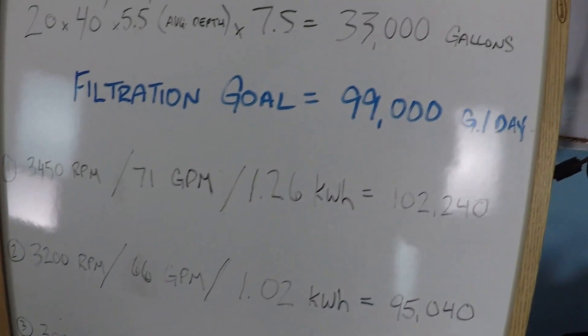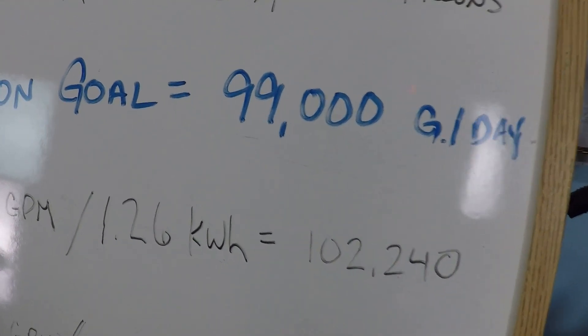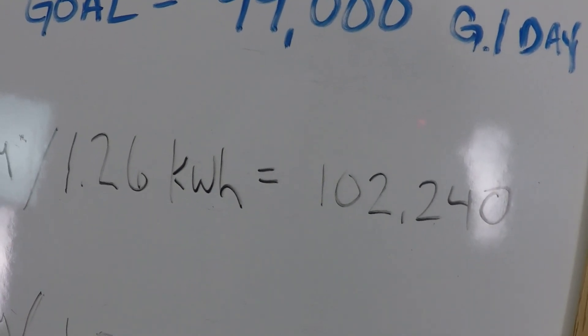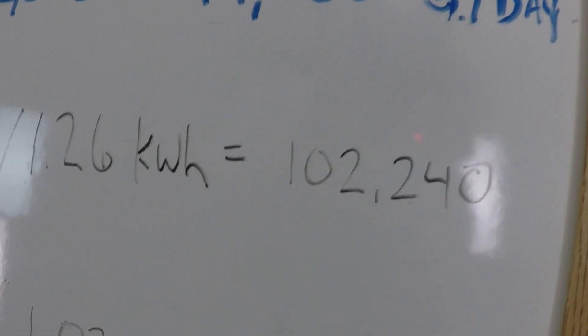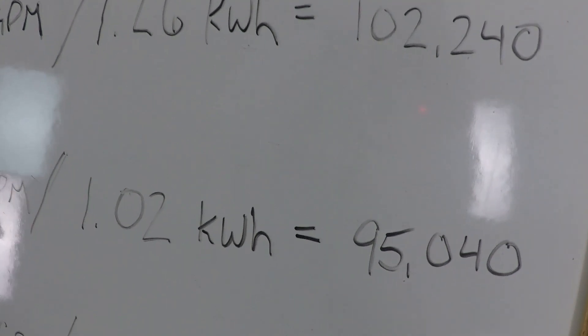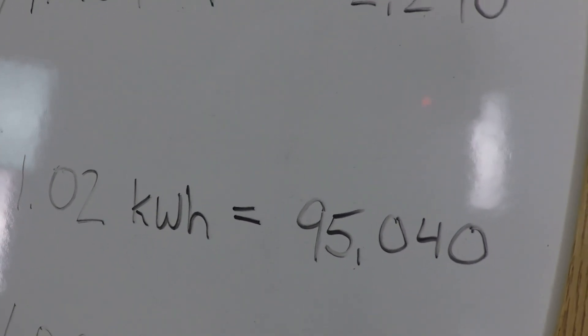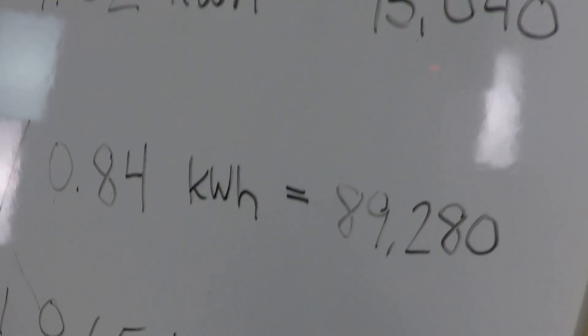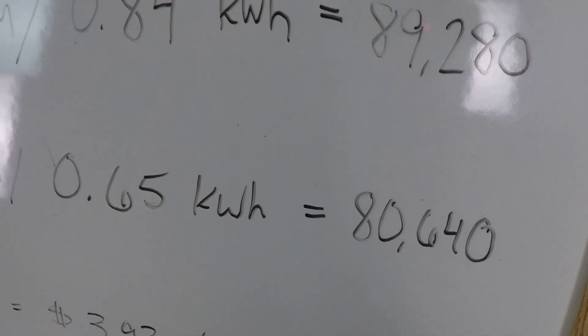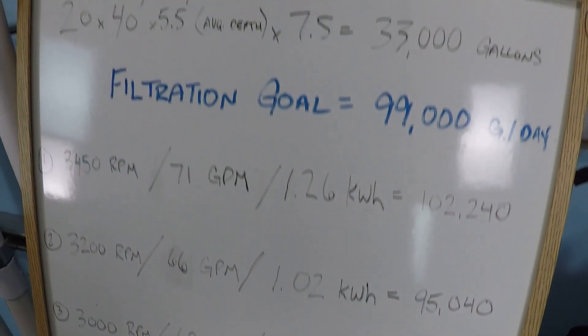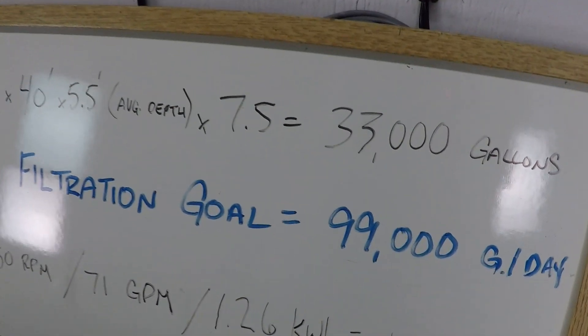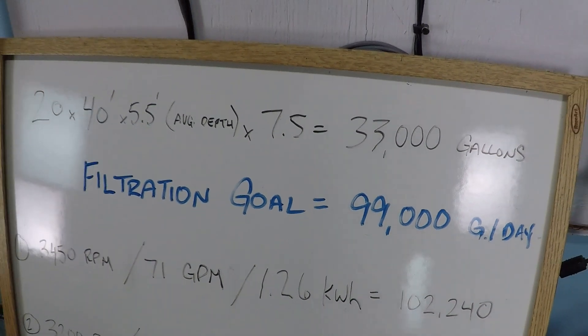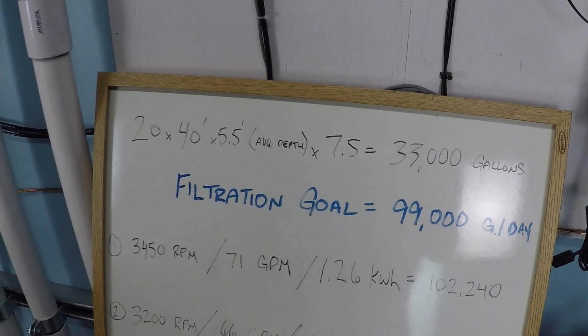This is pretty significant. We are losing flow. We want 99,000 a day. Our first test, 102,240 per day, 95,000, 89,000, 80,000. Now, as a pool and spa specialist, I want you to filter your water three times every day as the minimum value. But I know that most people don't do that.